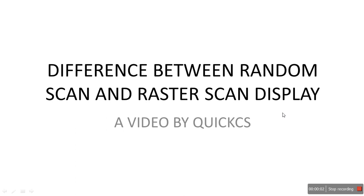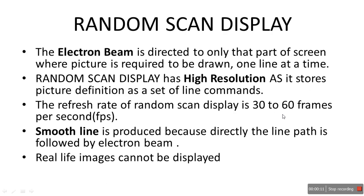Welcome to another computer graphics tutorial. Today we'll be learning about the difference between random scan and raster scan display. In random scan display, the electron beam is directed only to the part of the screen where the picture is to be drawn.